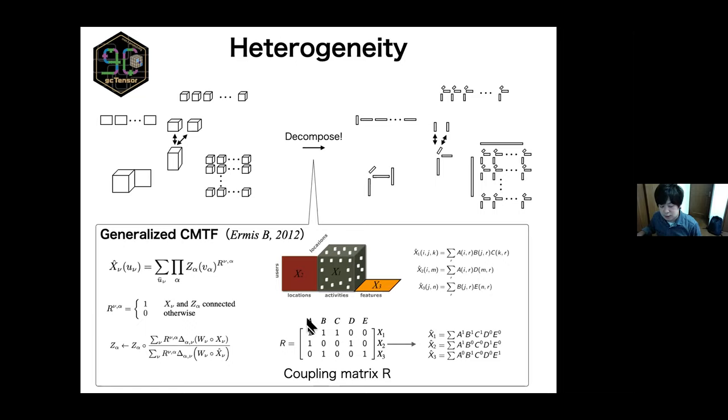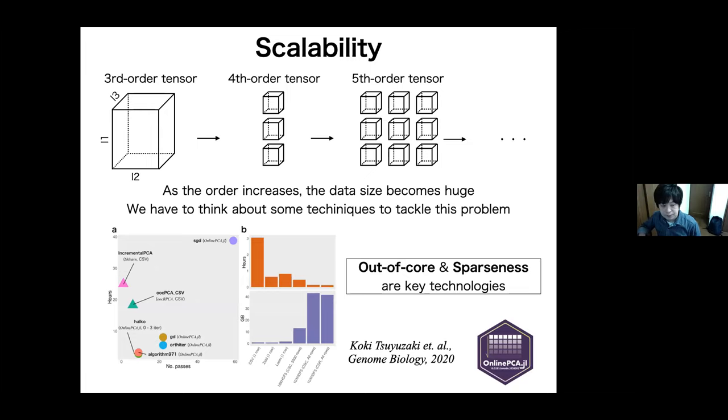In the near future, we do not have to implement such complicated modeling from scratch anymore. This algorithm is not available right now, but I'm developing this method as an R-package GCTensor. Scalability is also one of the disadvantages of the tensor analysis as the number of orders increases, the data size is getting bigger. That's why we have to think about some techniques to tackle this problem. In our previous benchmark study about principal component analysis, we found that out-of-core and sparseness are very effective for the scalability. So, I will extend these techniques to tensor decomposition.